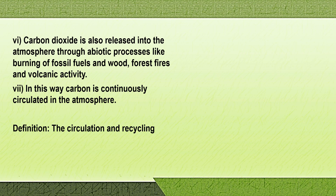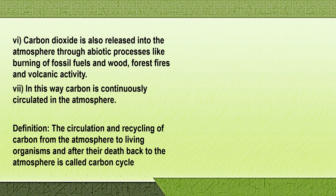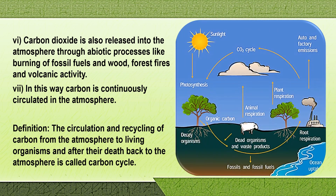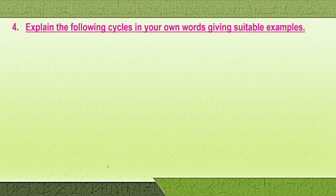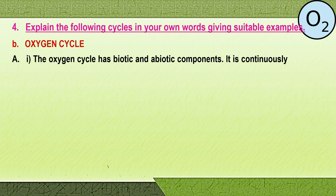Definition: the circulation and recycling of carbon from the atmosphere to living organisms, and after their death back to the atmosphere, is called the carbon cycle. There is also a figure of the carbon cycle that you need to draw. The second cycle is the oxygen cycle. The oxygen cycle has biotic and abiotic components, and oxygen is continuously produced and used in the atmosphere.